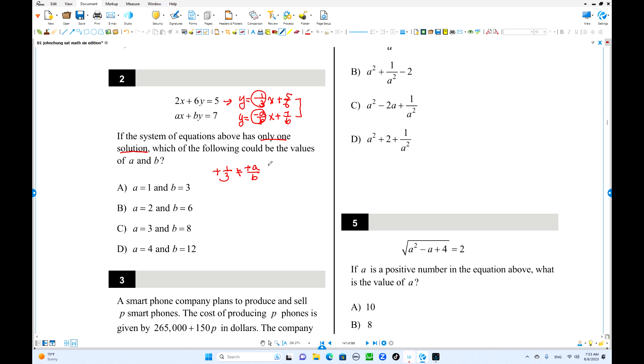So you can check it out. If a is 1, b is 3, that is 1 third. If a is 2, b is 6, it is still 1 third. This is what? a is 3, b is 8. 3 over 8 is different. Right? So that's the answer.